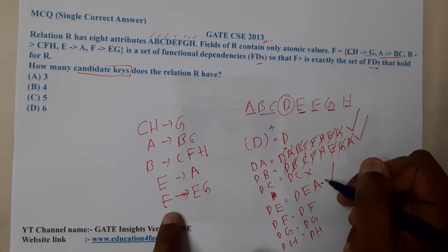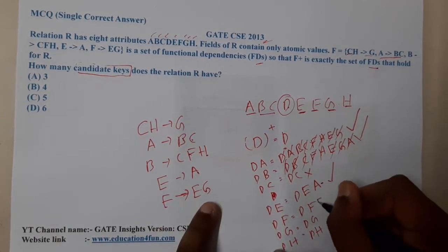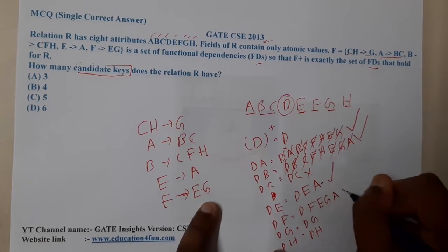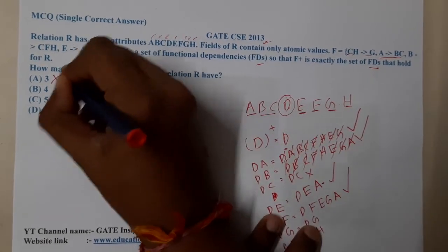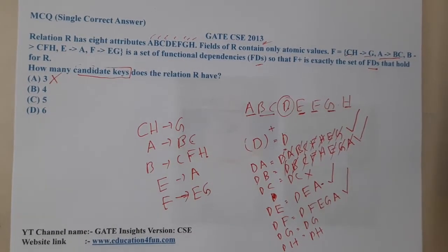DF: if F is there, I can get to E and G. From E, I can get to A. This is also a candidate key. Hence option A is wrong.